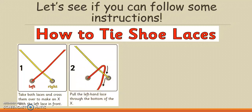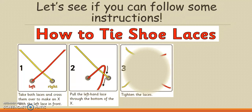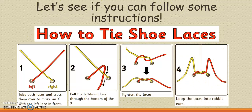Instruction number two: pull the left-hand lace through the bottom of the cross. Have a look at the picture again if you're not sure, and you can get your adult at home to help you with this. Tighten the laces together and pull both sides. Loop the laces into rabbit ears, just like that's shown in the picture. If you're a bit stuck, go back to number one and see if you can start again.